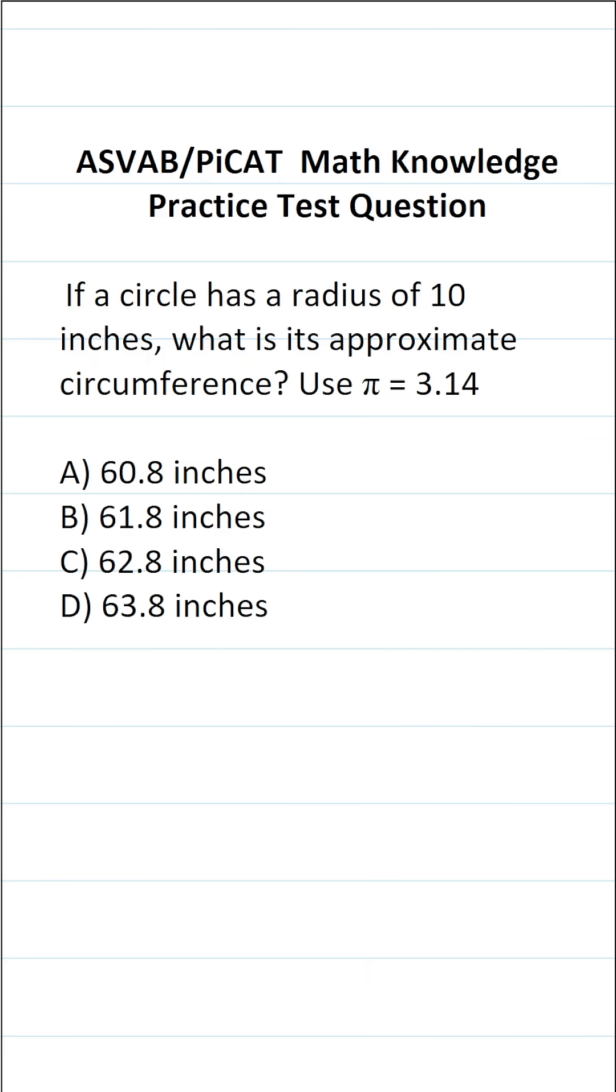This math knowledge practice test question for the ASVAB and PiCAT says, if a circle has a radius of 10 inches, what is its approximate circumference? Use pi equals 3.14.